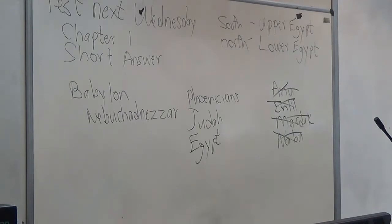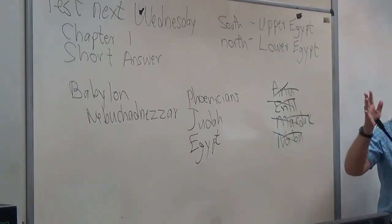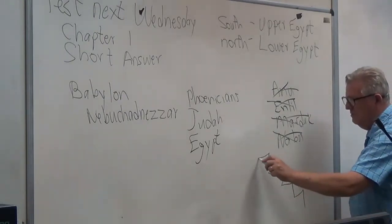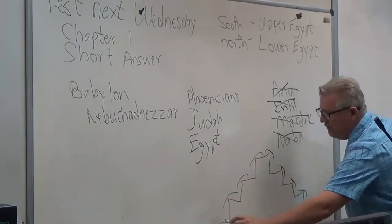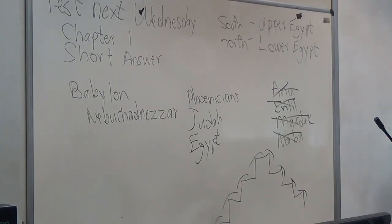Nebuchadnezzar's wife was used to mountains, being a Mede from the land of Media — Persia, the land of Iran — which is full of mountains. She was used to seeing mountains, so Nebuchadnezzar built what's called the Hanging Gardens: a big ziggurat-like structure from which he hung certain types of plant life. The idea was to keep his wife happy by making something that resembled a mountain right there in the city of Babylon.